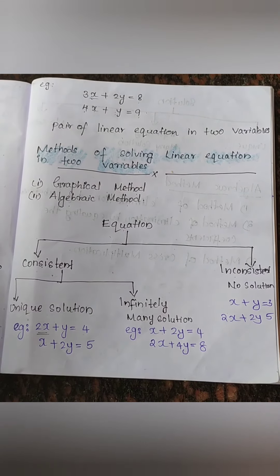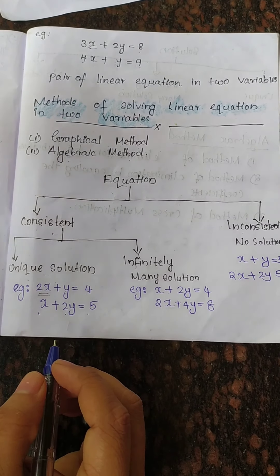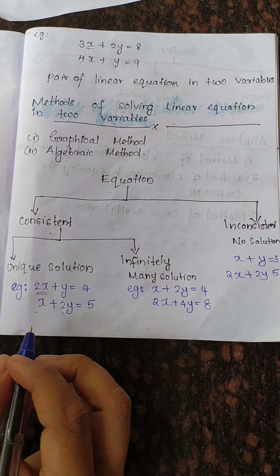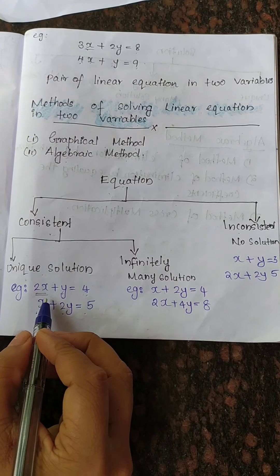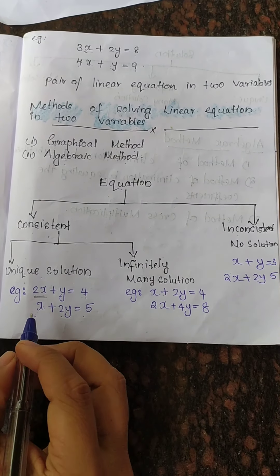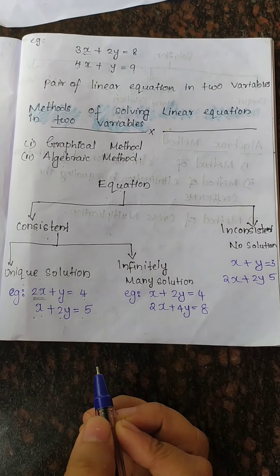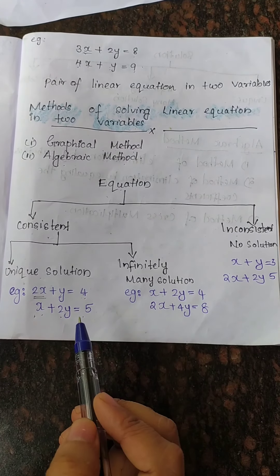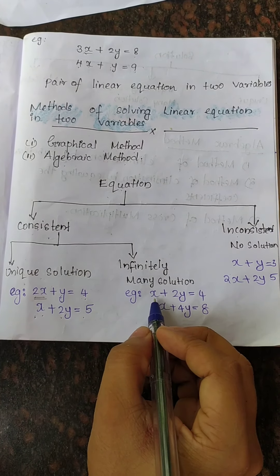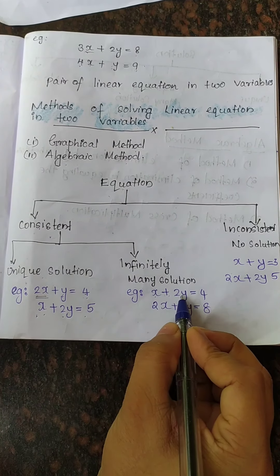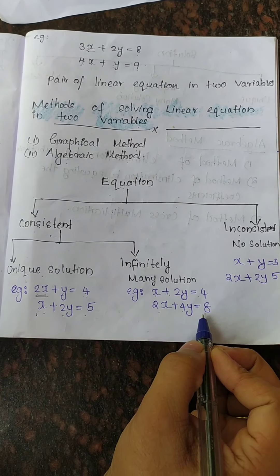I will show an example of equations with a unique solution: 2x plus y equals 4, and x plus 2y equals 5. For a linear equation in two variables with infinitely many solutions, an example is: x plus 2y equals 4 and 2x plus 4y equals 8.